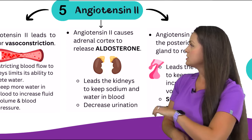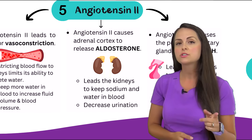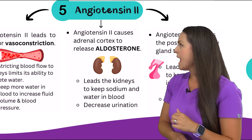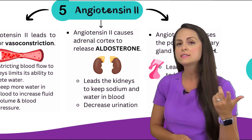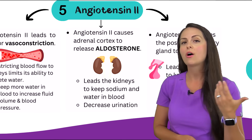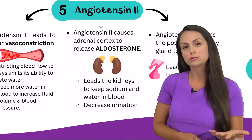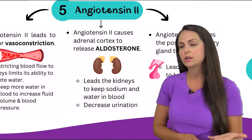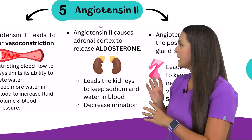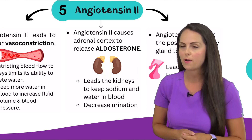In addition, angiotensin 2 is going to cause our adrenal cortex to release a hormone called aldosterone. Aldosterone will cause the kidneys to keep sodium, which will also cause us to keep water. Again, we want to do this because we're trying to increase our blood volume. Whenever this happens, your patient will have a temporary decrease in their urination, which again is what we want.